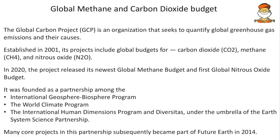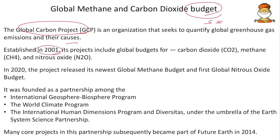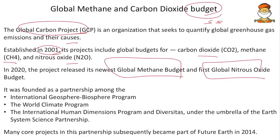Next is the global methane and carbon dioxide budget. The Global Carbon Project is the key organization — it seeks to quantify global greenhouse gas emissions and their causes. It was established in 2001, and its projects include global budgets for carbon dioxide, methane, and nitrous oxide. In 2020, it released a new global methane budget and the first global nitrous oxide budget.